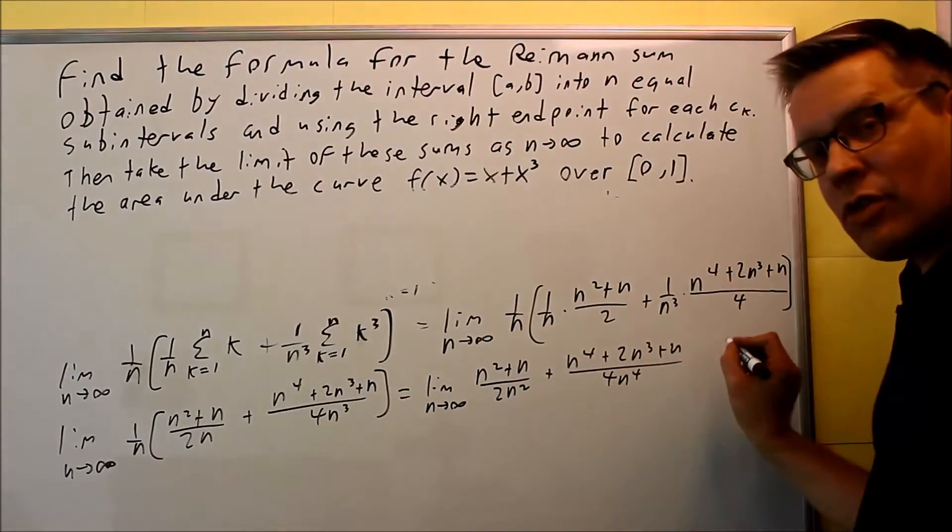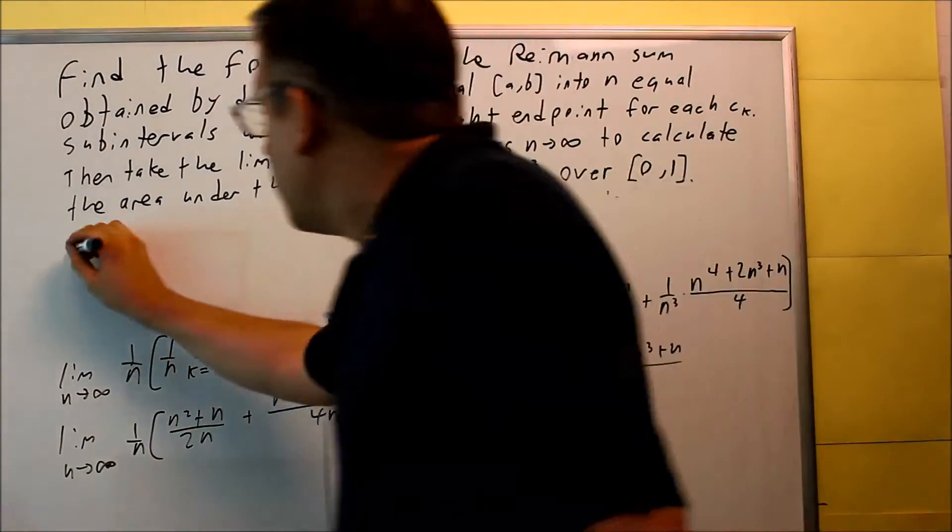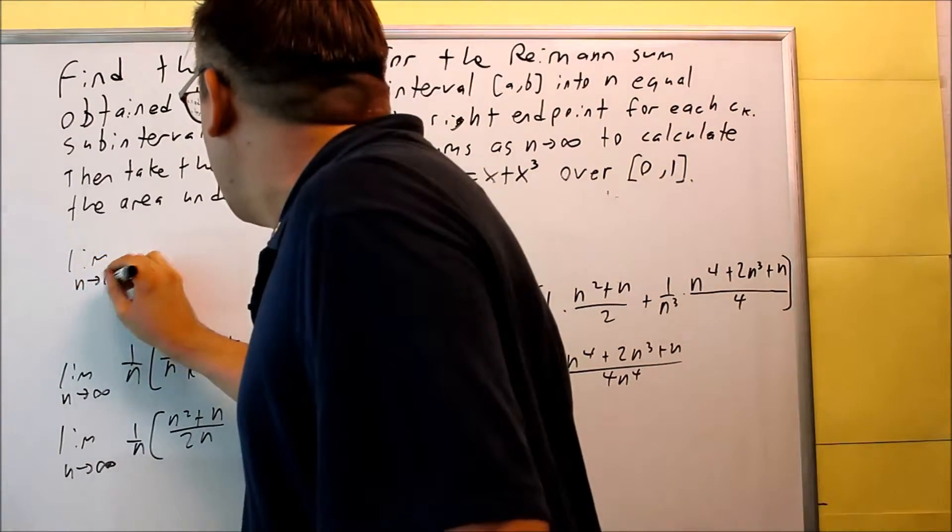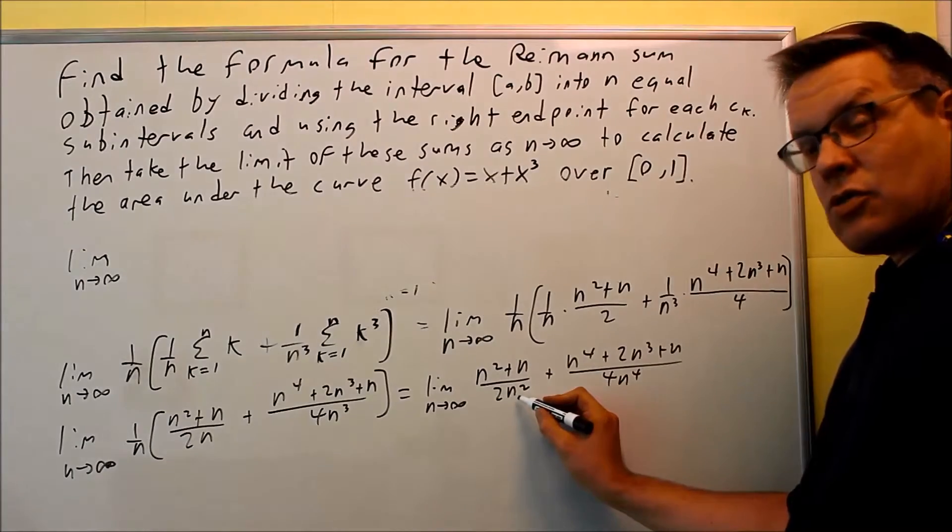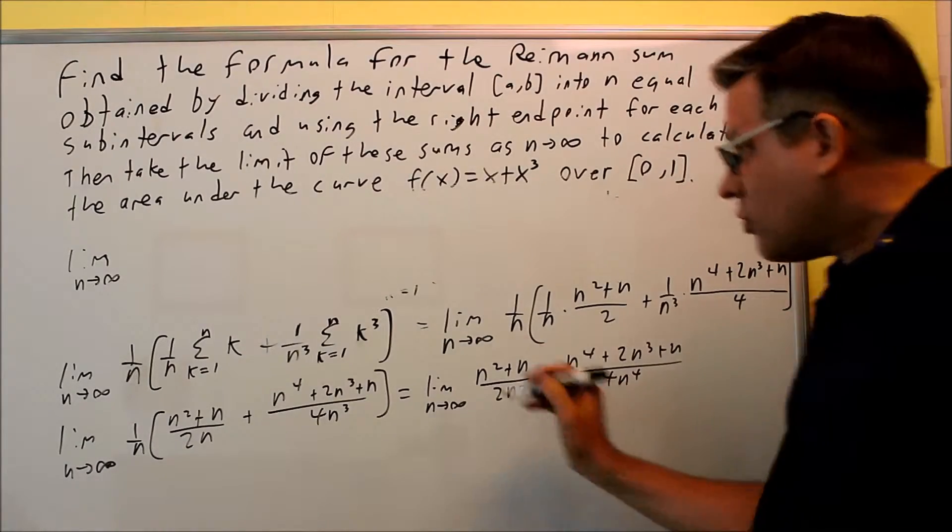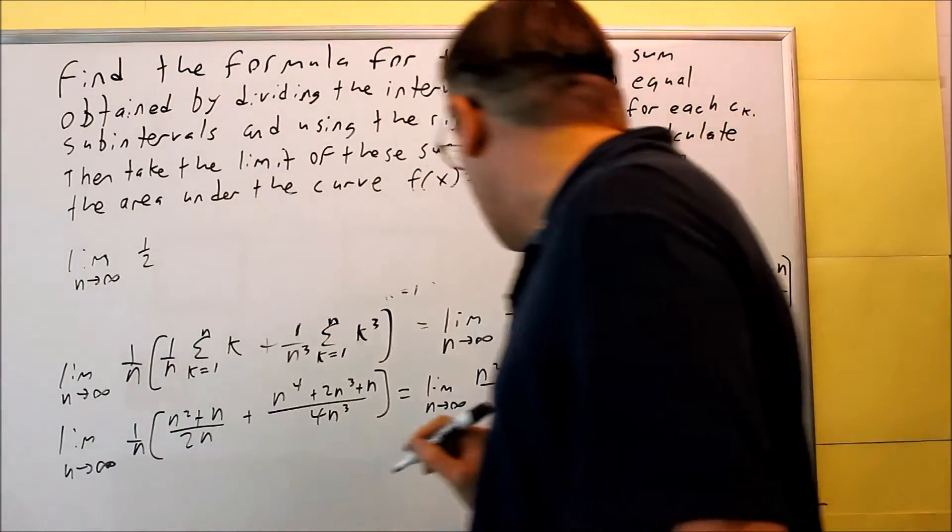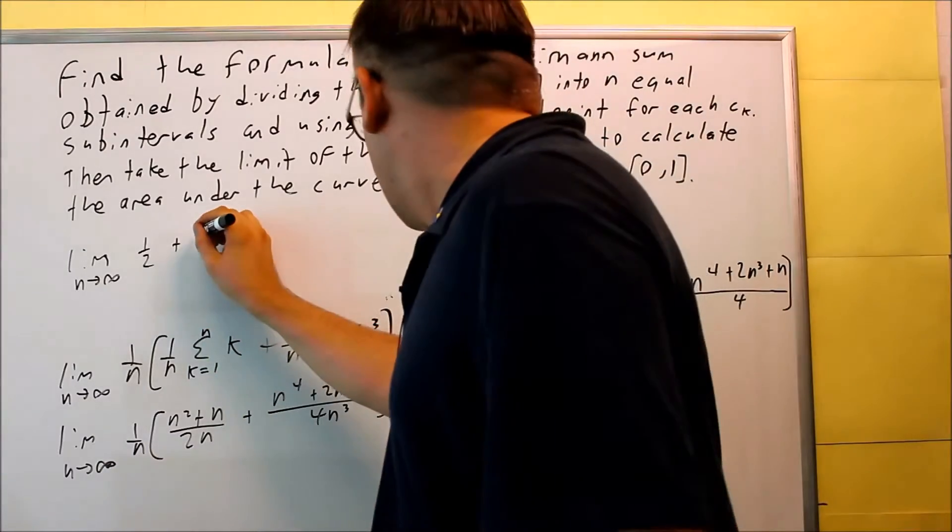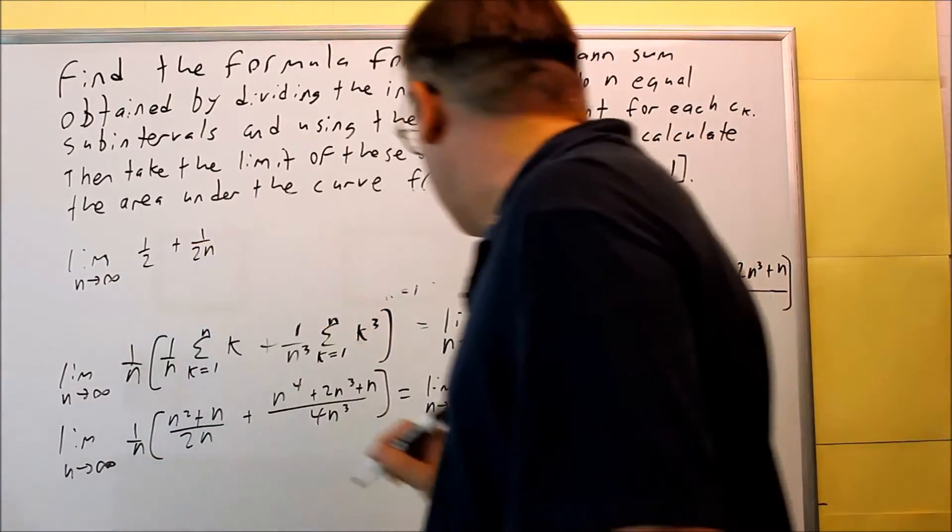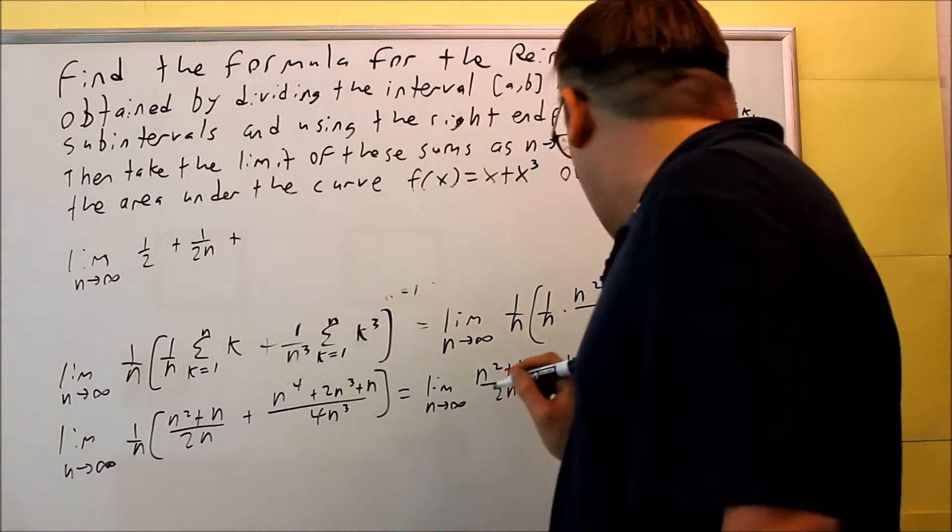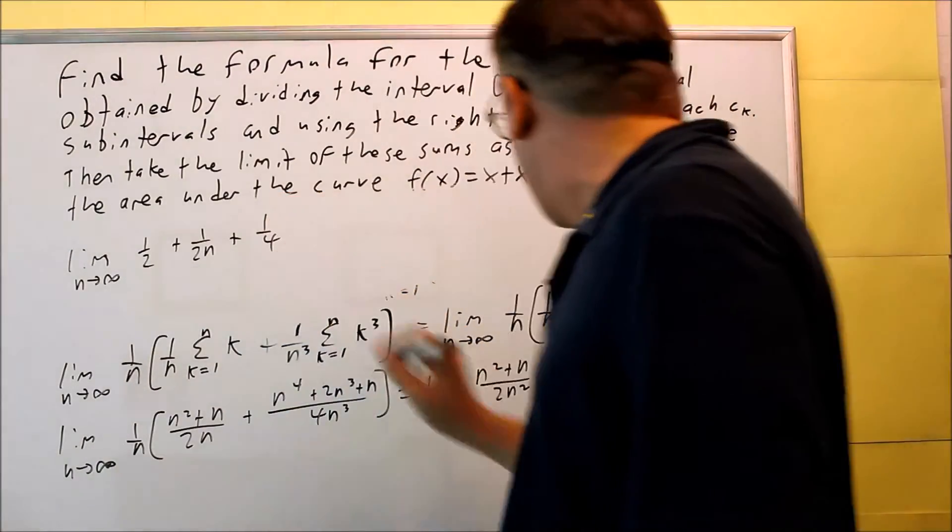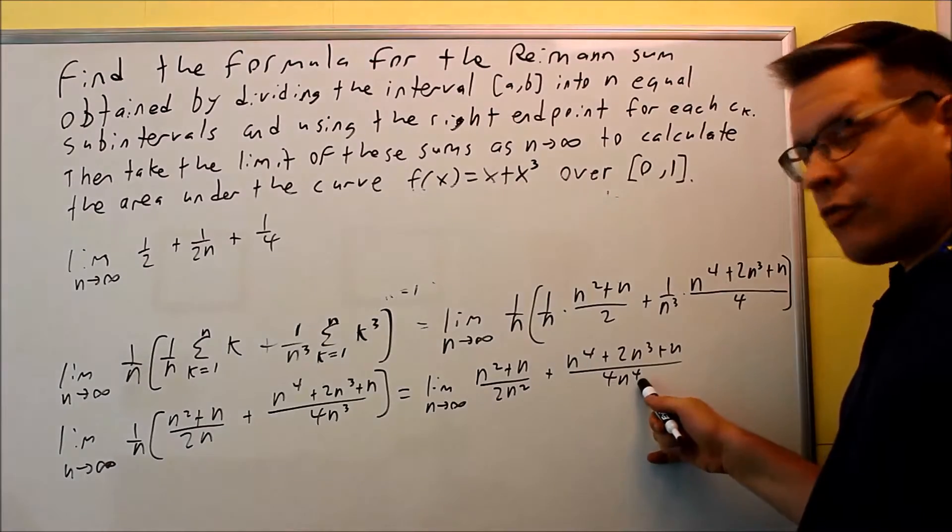So I'm going to have this one. I'm going to separate everything all the way out. So I'll do limit n goes to infinity. I'm going to take everything on top divided by 2n squared, which means I'll get a 1 half on this one plus 1 over 2n. Next, for the rest of it, I have 1 fourth, n to the fourth over 4n to the fourth. So I'll just get 1 fourth.